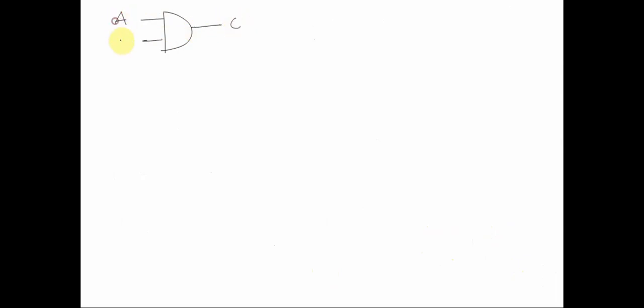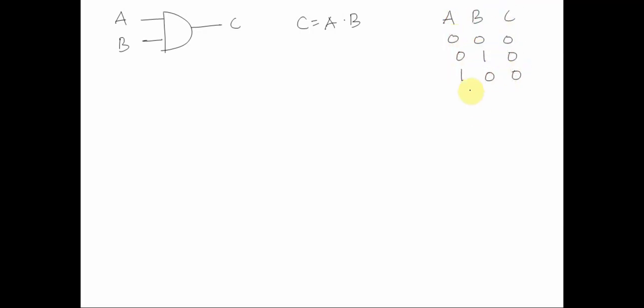For the AND gate, C equals A AND B. The truth table is: A=0, B=0 → C=0; A=0, B=1 → C=0; A=1, B=0 → C=0; A=1, B=1 → C=1.